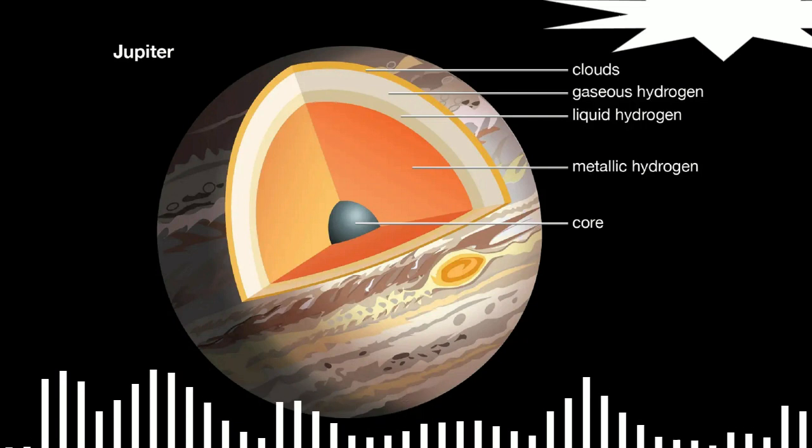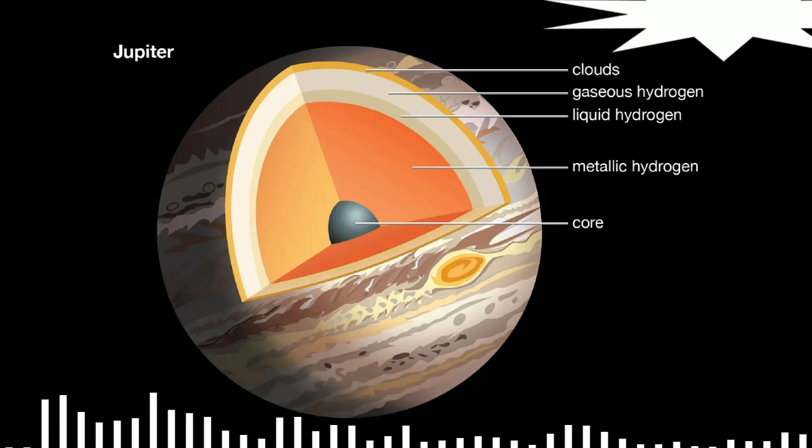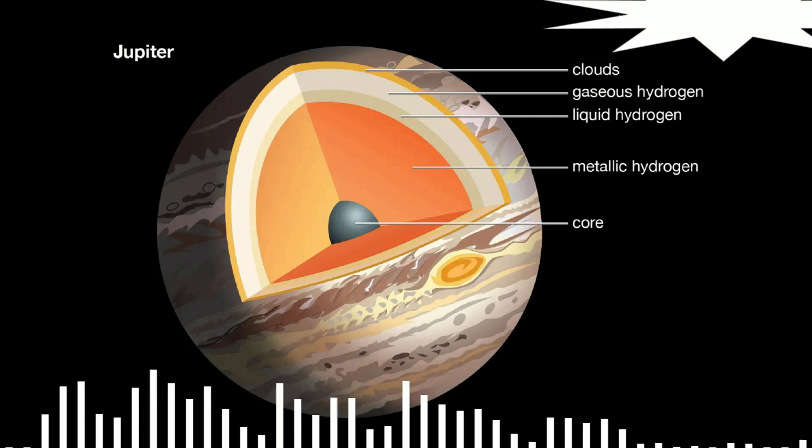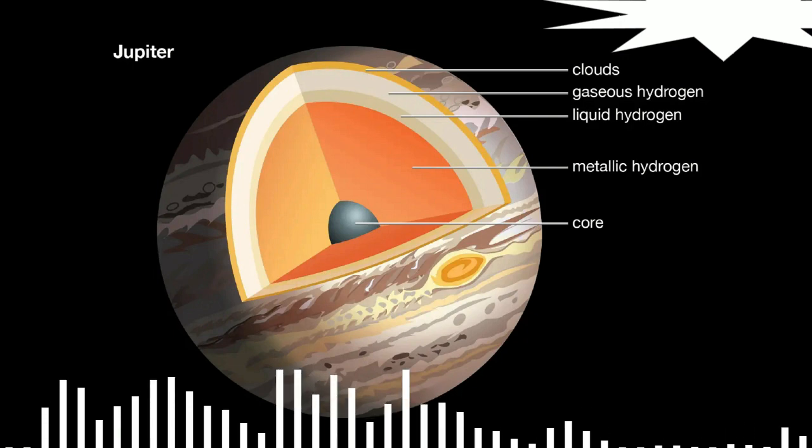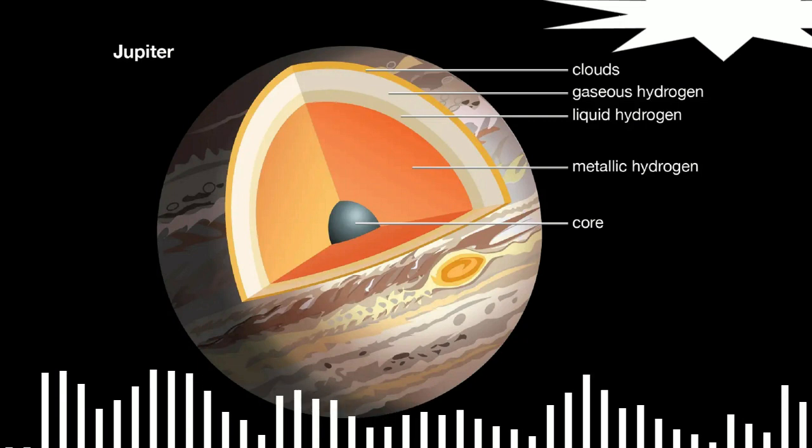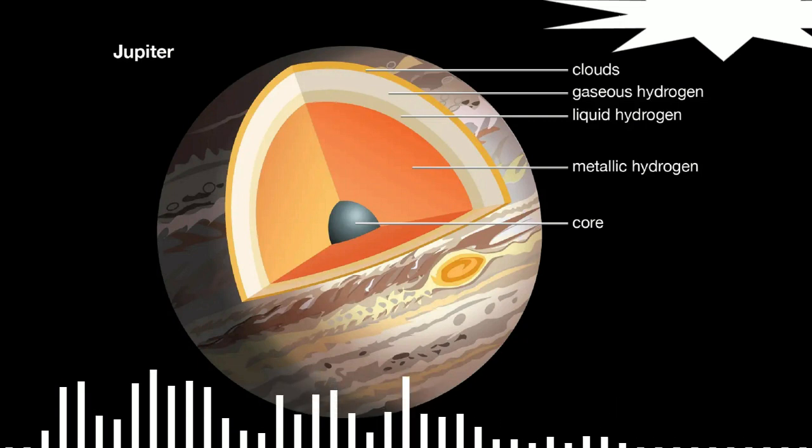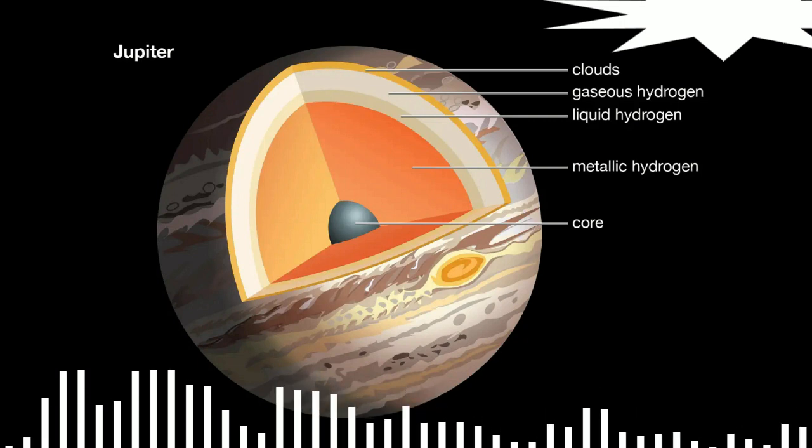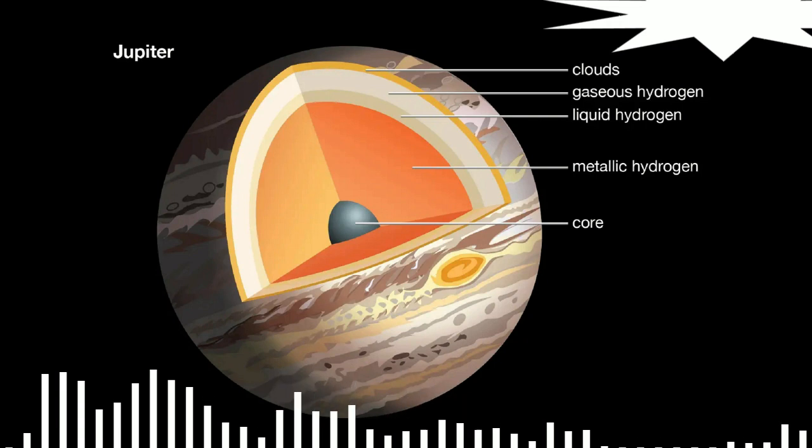Hydrogen is in the first position of the alkali metals group in Mendeleev's periodic table. Scientists assume it may have pronounced metallic properties. However, this is only theoretically possible at extreme pressures. The atomic nuclei are so close together that they are separated only by dense electron liquid flowing between them.